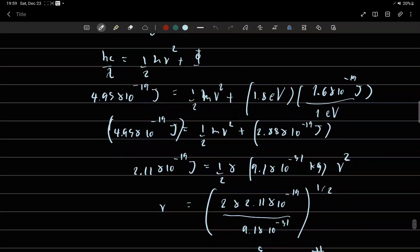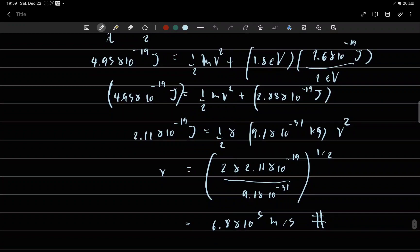V equals 6.8 times 10 to the power of 5 meters per second.